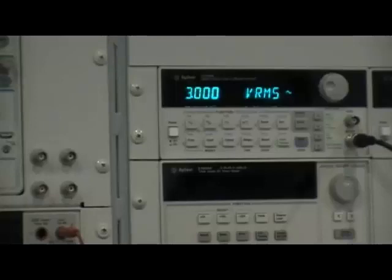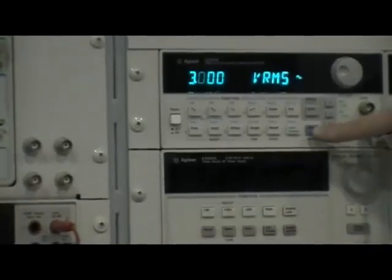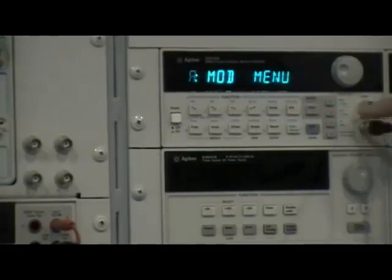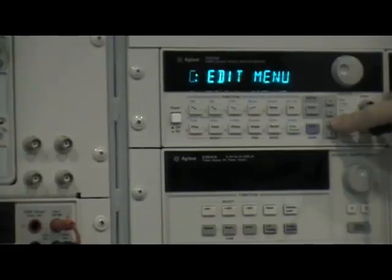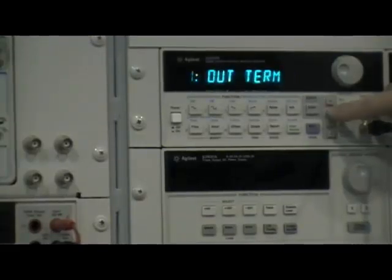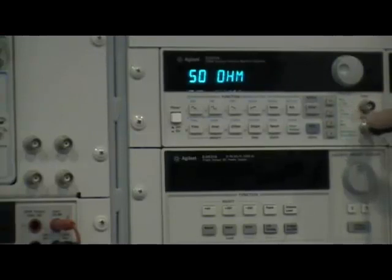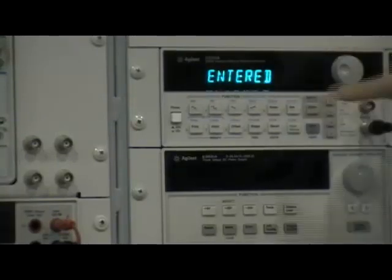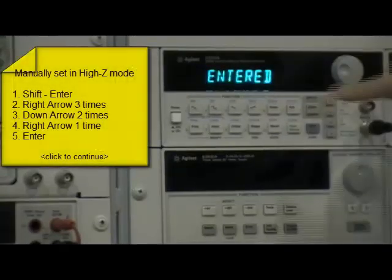we can set the function generator from its default mode to the high Z mode using the menu functions. Access the menu functions by pushing shift enter. Page through to find the system menu by pushing right arrow 3 times. Select output termination by pushing down arrow 2 times and change from 50 ohms to high Z by pushing the right arrow 1 time. Select the mode and press enter.